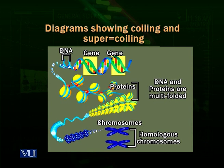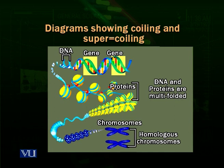One nucleosome is a set of histone molecules with two wraps of DNA molecule around it. The DNA wrapped in two circles around the histone molecule is about 200 base pairs long. The part of DNA attaching nucleosomes to each other is called linker DNA, which is roughly about 80 base pairs long.